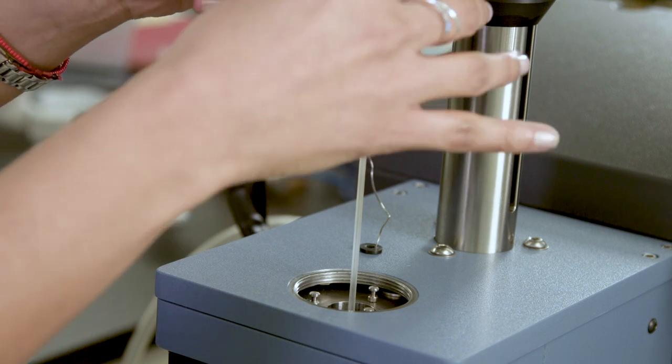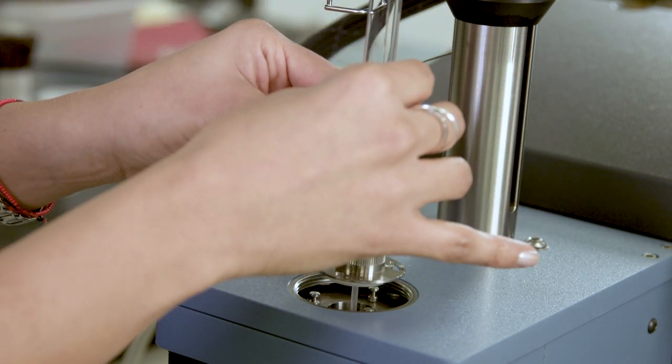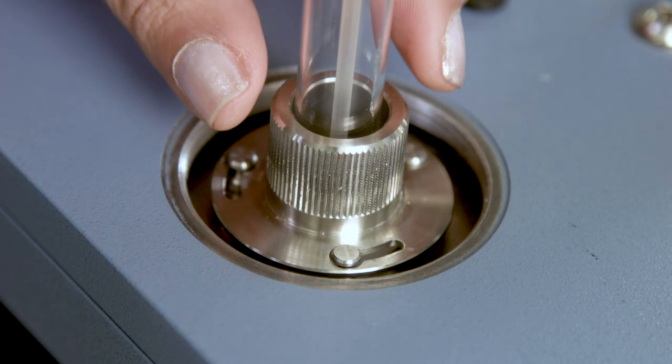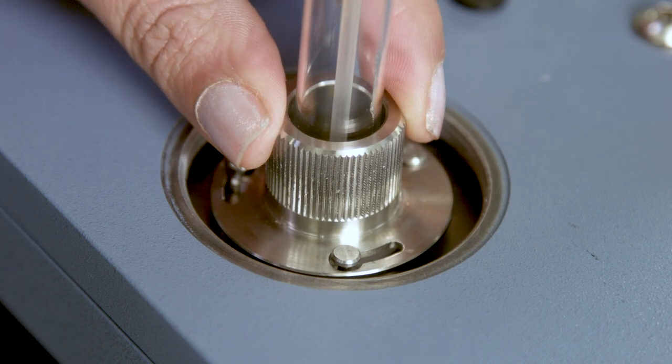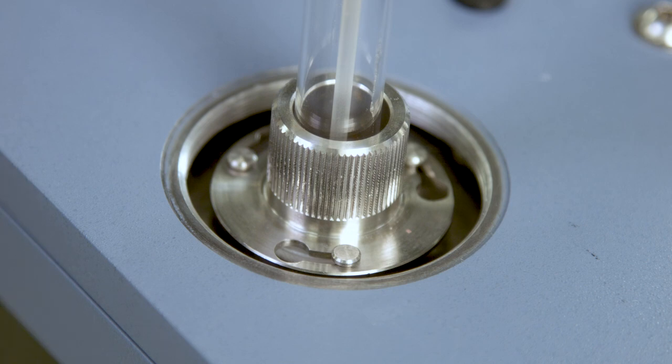Insert this assembly into the stage opening, aligning the key slots in the retainer ring with the posts. Press down and turn the retainer ring clockwise to lock the assembly in position.